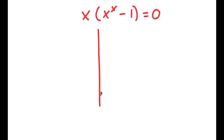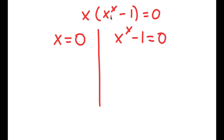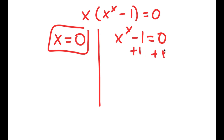This gives me two equations: x equals 0, and x to the power of x minus 1 equals 0. So x equals 0 is already a solution. For x to the power of x minus 1 equals 0, I add 1 to both sides — those cancel — and I get x to the power of x equals 1.